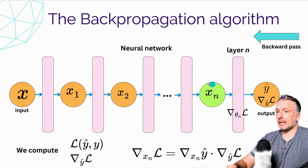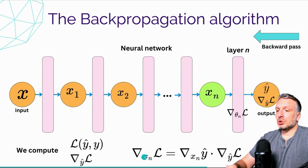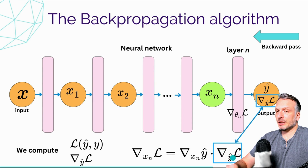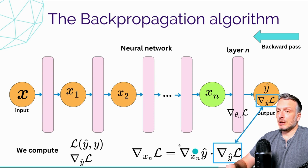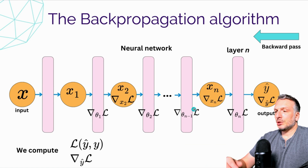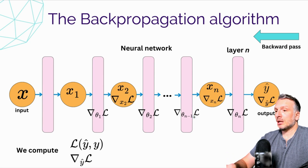To backpropagate gradients to earlier layers, we also store the gradient at node xn. The gradient of the loss with respect to xn equals the gradient of the network output with respect to xn, times the gradient of the loss with respect to the network output. We pull the already-computed gradients from the previous node, and compute the gradient of this block's output with respect to its input using the computational graph. We store this gradient at the xn node. We can iterate this process to compute gradients for all computational blocks and intermediary nodes.